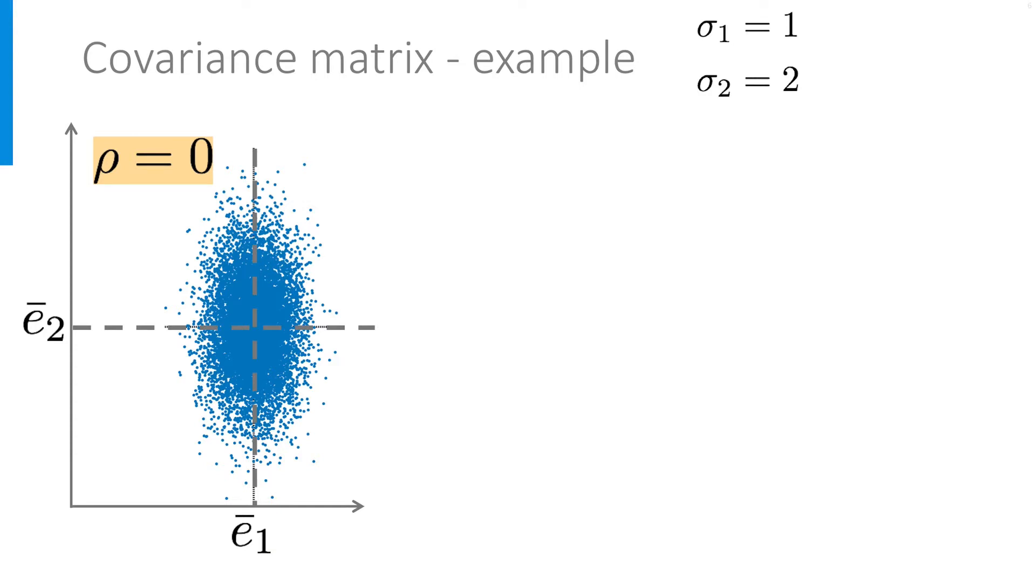The first value for rho we choose is zero. This plot shows then 10,000 outcomes for the random vector with these given standard deviations and correlation coefficient. The horizontal axis refers to e1, the vertical axis to e2. Note that the mean values are indicated along those axes. Since the standard deviation of the second variable is twice that of the first variable, also the spread in that direction is twice as large.